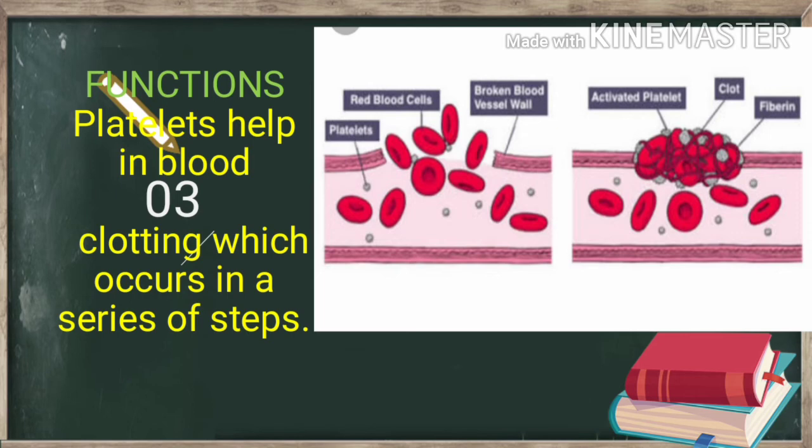If the number of platelets falls to an abnormally low count, then coagulation occurs very slowly, which often leads to hemorrhage. Such a situation occurs in certain diseases such as viral dengue fever.